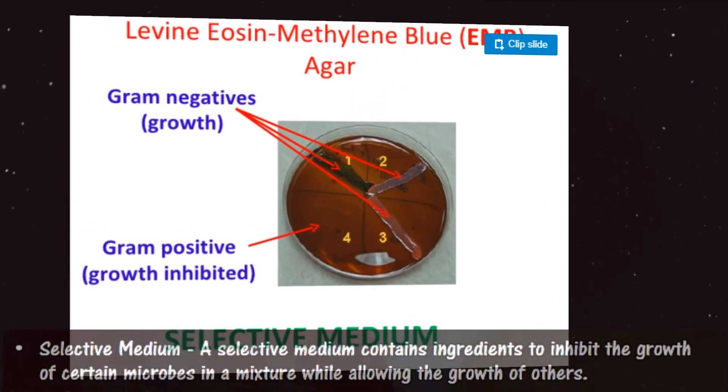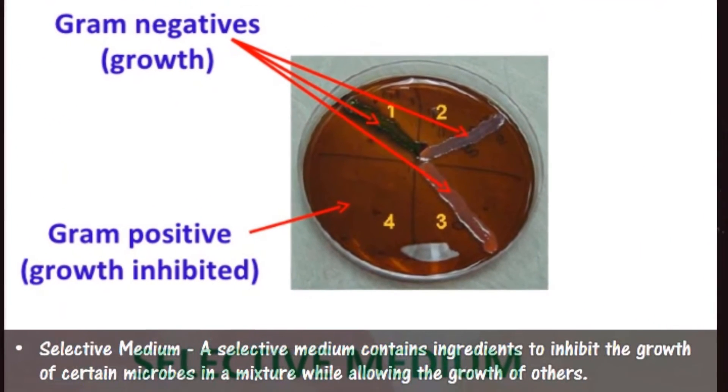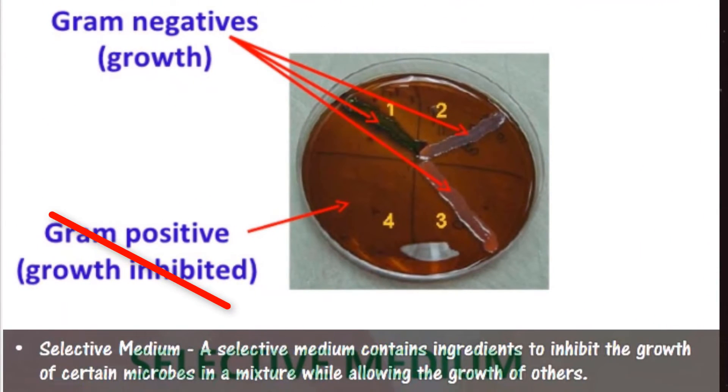A selective medium contains ingredients to inhibit the growth of certain microbes in a mixture, while allowing the growth of other microbes.